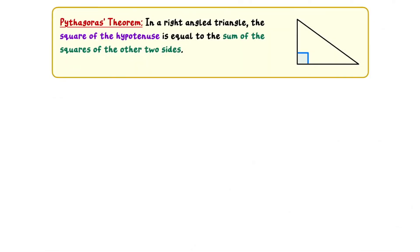Now that we have the necessary background knowledge, let's look at the statement of Pythagoras' theorem. In a right-angled triangle, the square of the hypotenuse is equal to the sum of the squares of the other two sides.